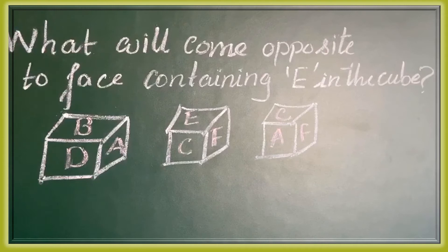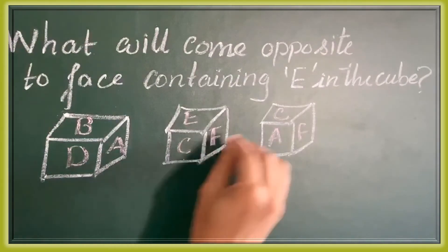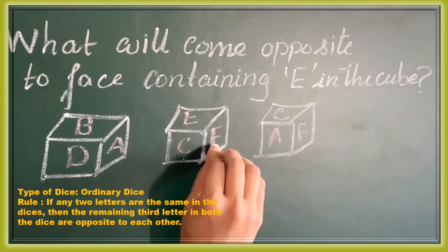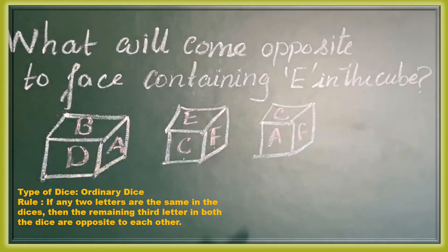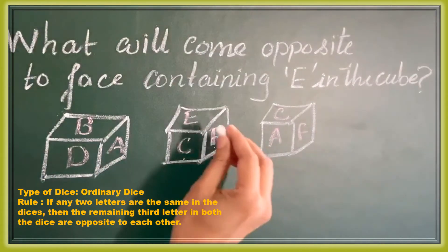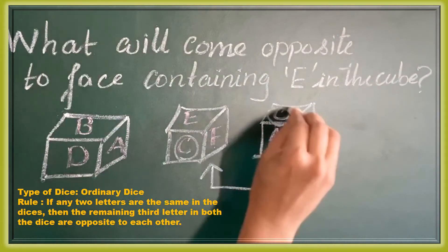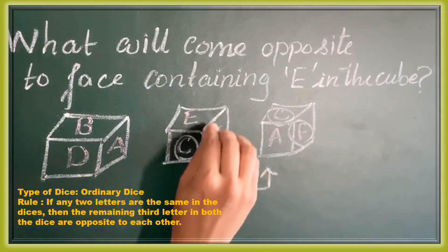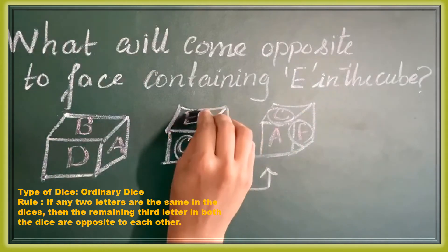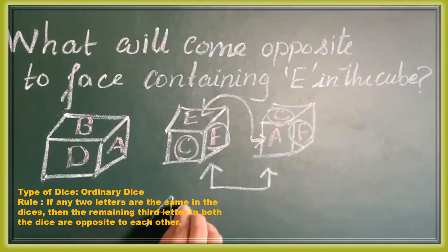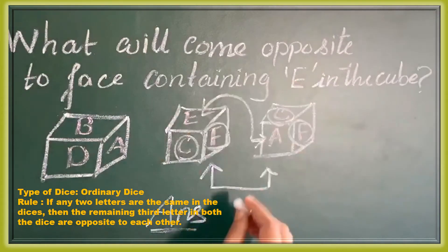What is the opposite of E? Check which is the matching face: C matches and also F matches. So if there are 2 matches, it's very simple. These two faces match between the two dice, so the one that is not matched is E. Therefore E and A are opposites — E's opposite is A.